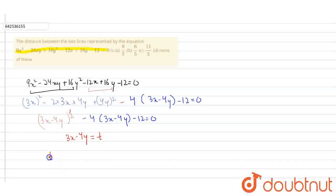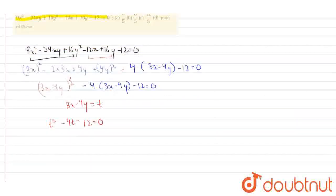On solving this equation by middle term split, it is t square minus 6t plus 2t minus 12 is equal to 0.